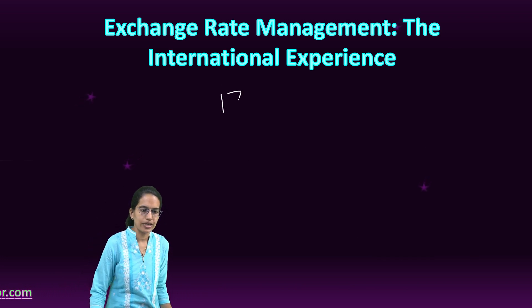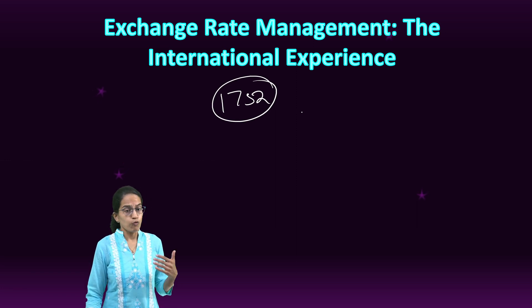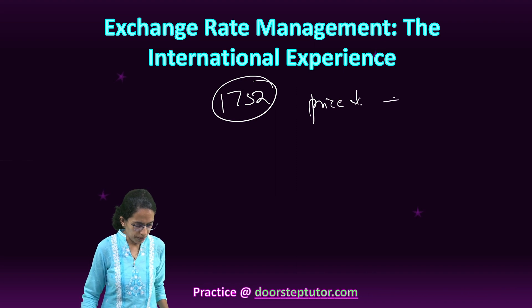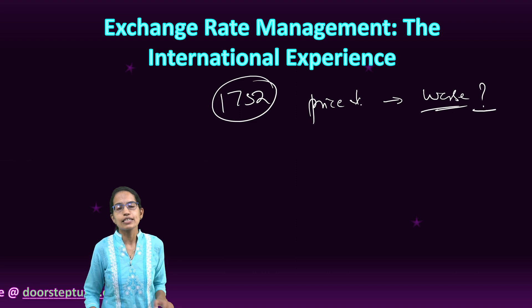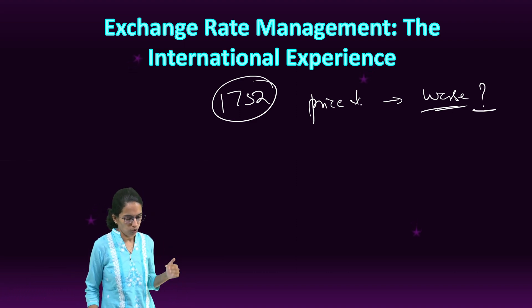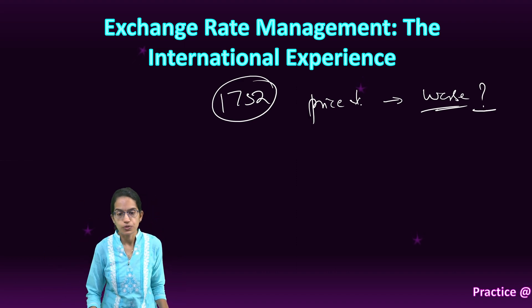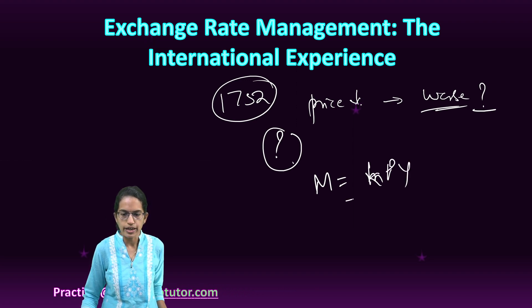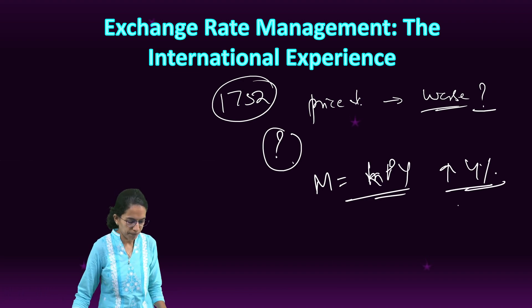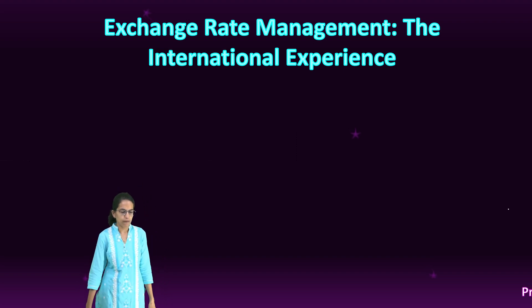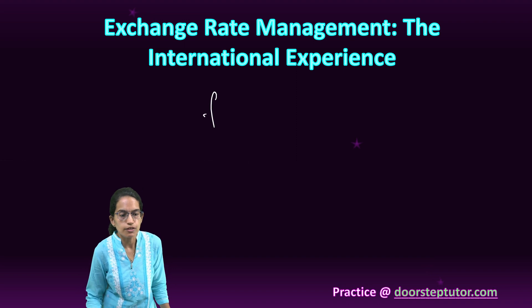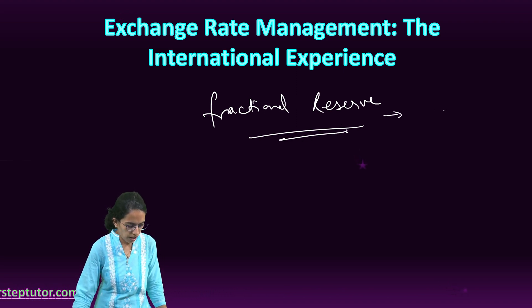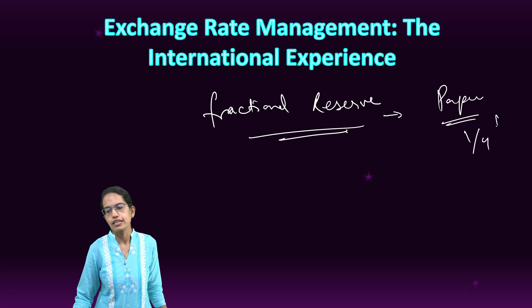However, David Hume in 1752 refuted this concept, arguing: what would happen if the stocks of gold fell? If gold stocks declined, all prices would decline. Since all countries are in the same situation, no country would be worse off. Cheaper goods would be produced at home, imports would slowly decrease, and exports would start to rise. There were two important components explained: first, fractional reserve banking, which talked about economizing gold, explained by paper currency — paper currency was backed by nearly one-fourth of the gold currency.